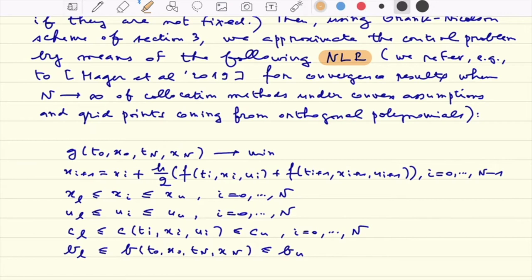So how do we retrieve an NLP instead of our initial optimal control problem? Well, the idea is that we'll just write that we want to minimize not G of x at t0 but of its approximation x0 and xN for x of tf. The idea being that of course we have some approximation scheme.